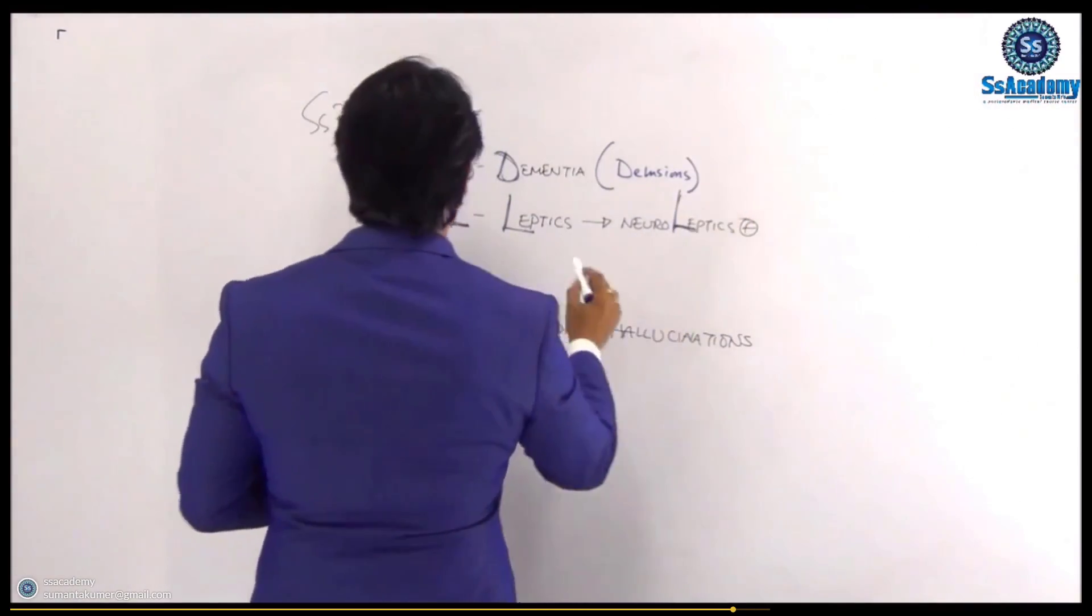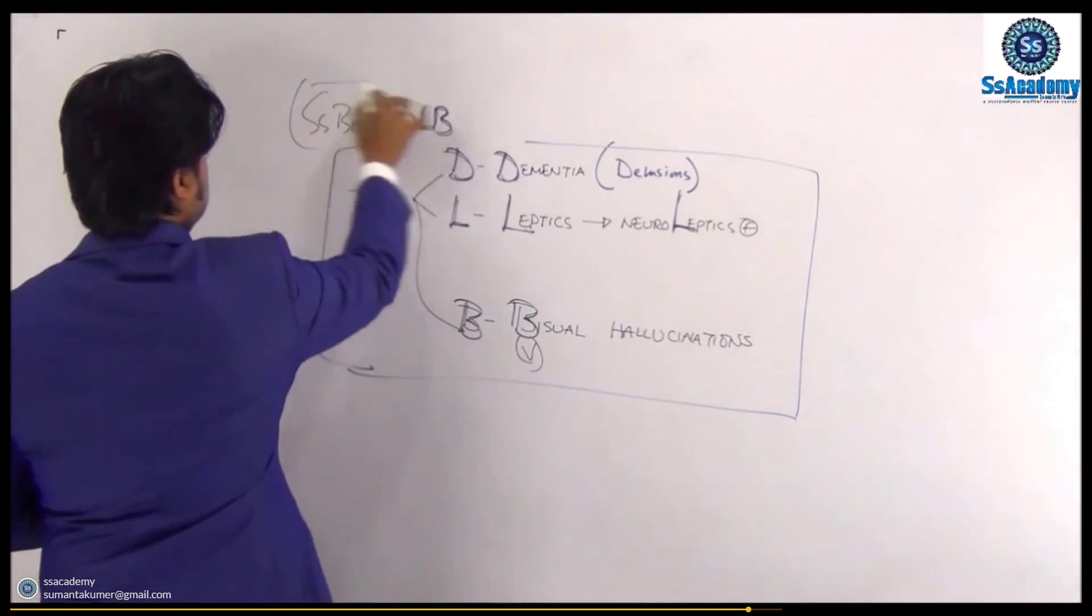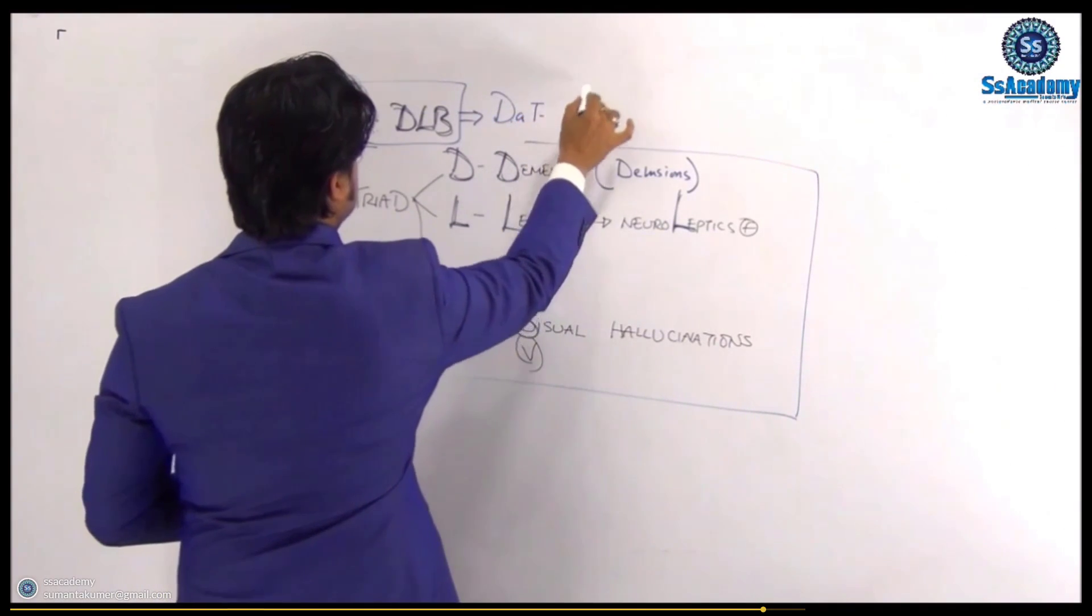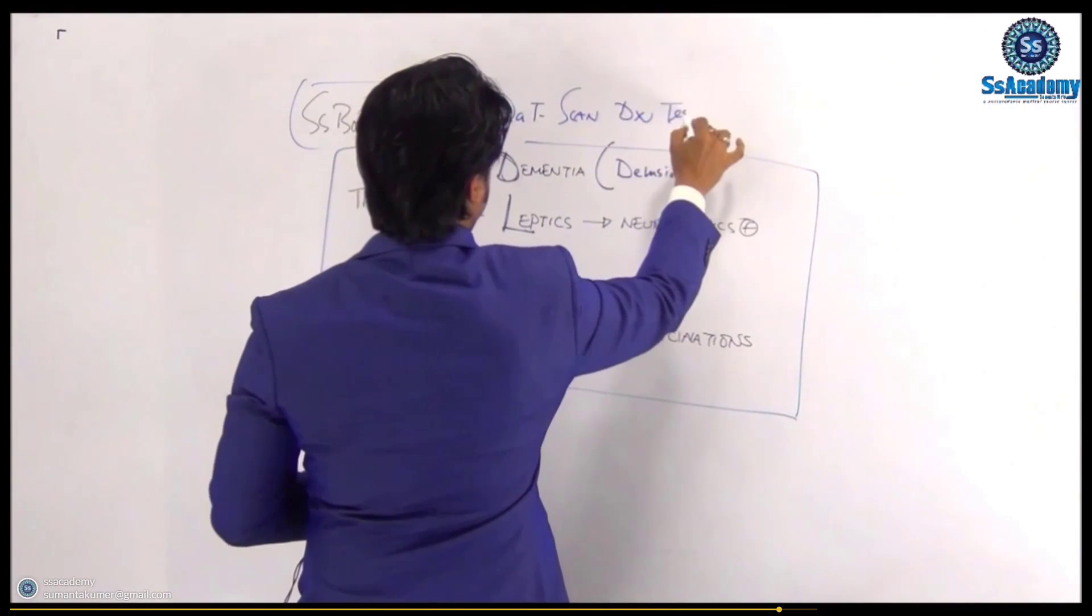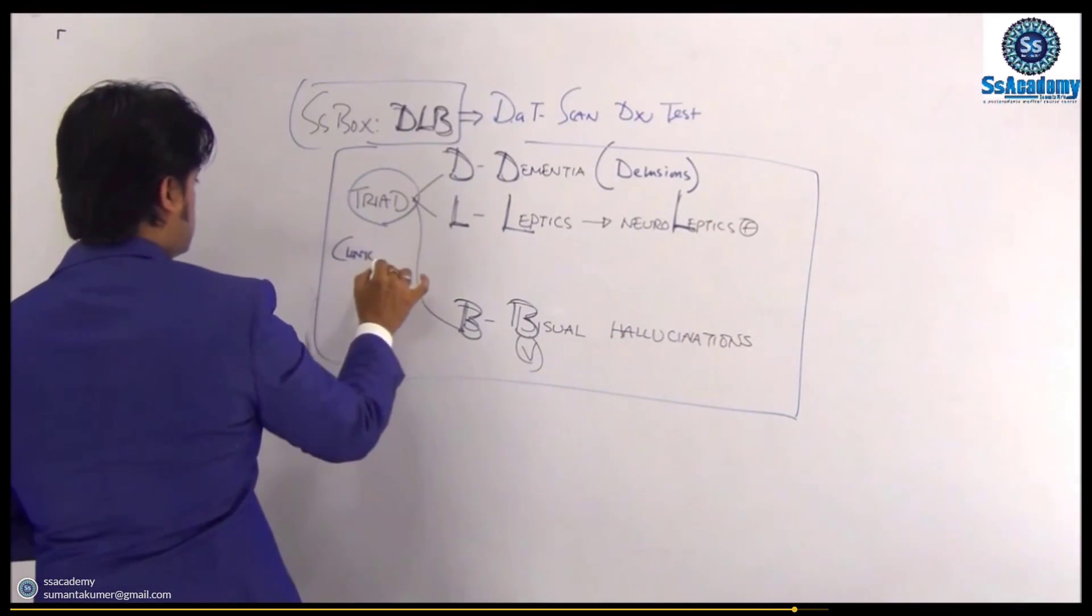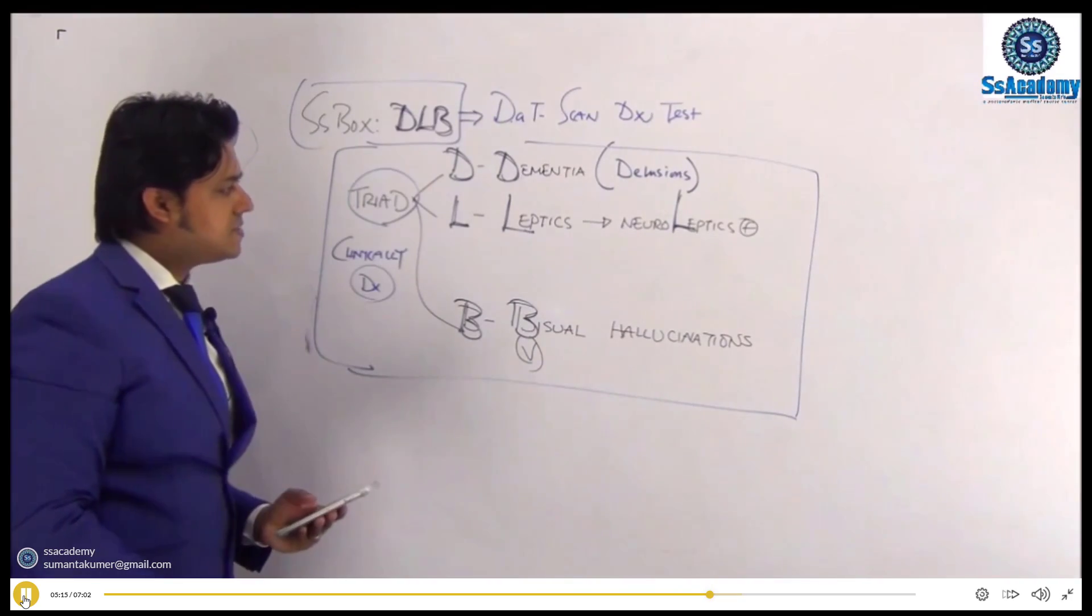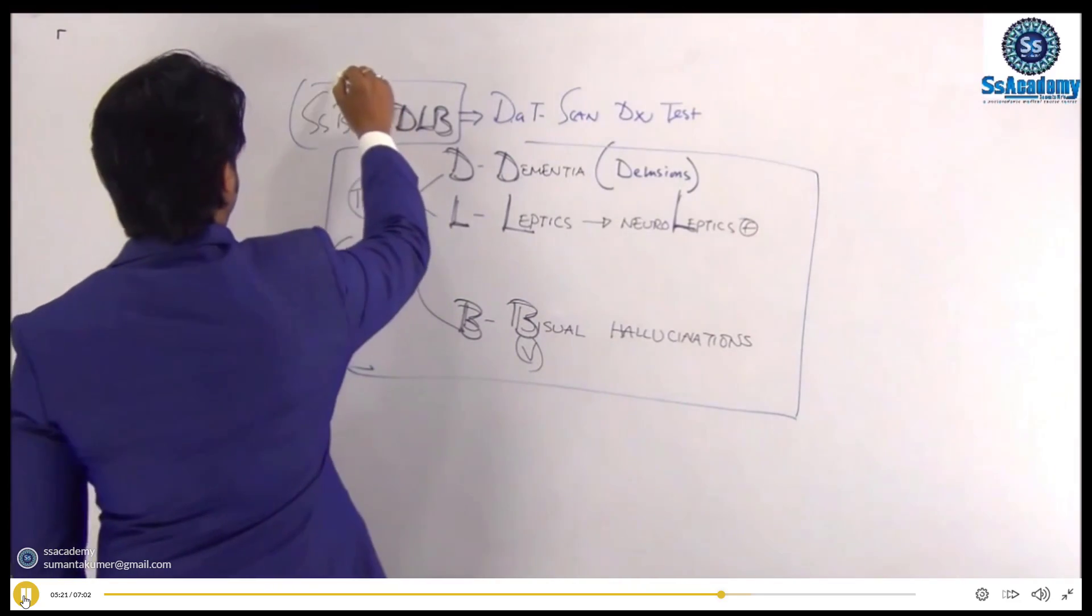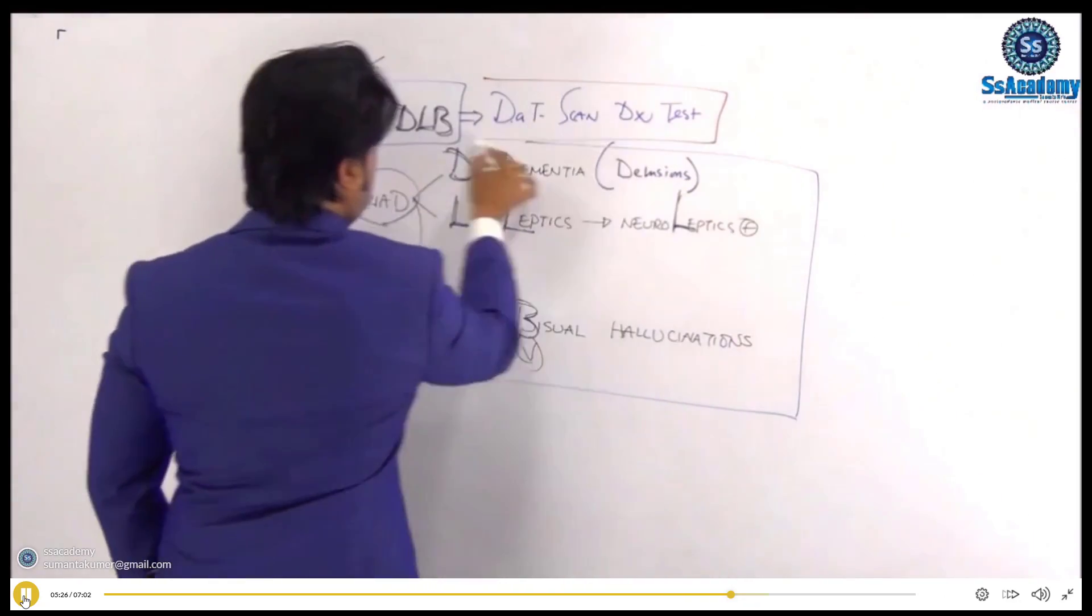And most importantly, we can make a box that is DLB. The last thing, that is the DAT scan. DAT scan is the diagnostic test. Remember diagnostic test. Otherwise, DLB is a clinical diagnosis. Clinical diagnosis possible by having these features. So this is very important. The important things that we already covered here, that is the three-star topics. So as I say, this is the box that we need to remember.